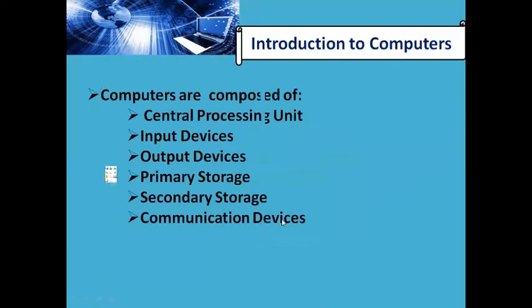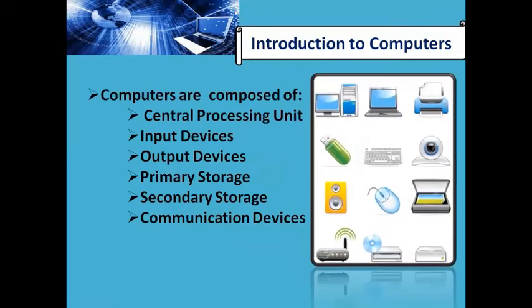Computers are composed of different components. When we talk about a computer system, the term 'system' means that different components combine and work together to achieve some common objective. In a computer system, the common objective is data processing. We have different components like the Central Processing Unit — the CPU — which is the most important component.